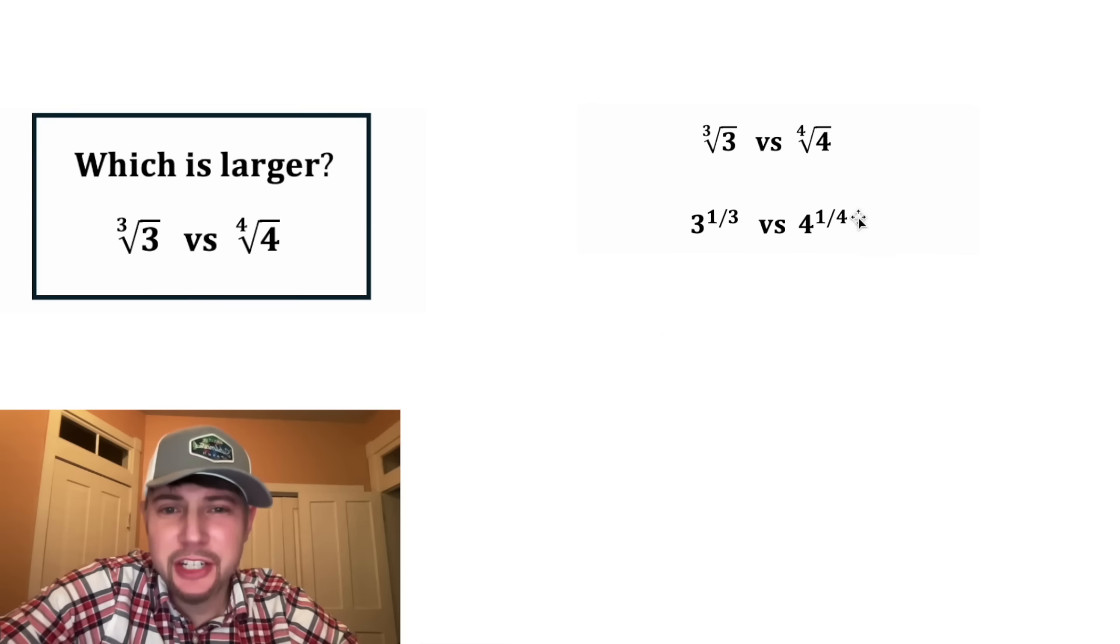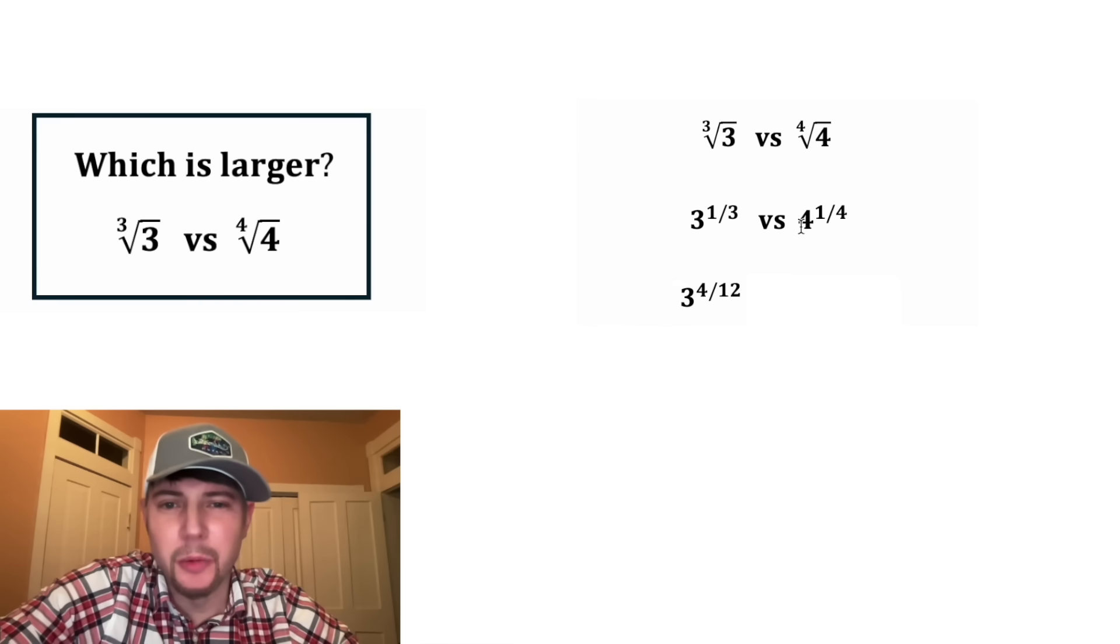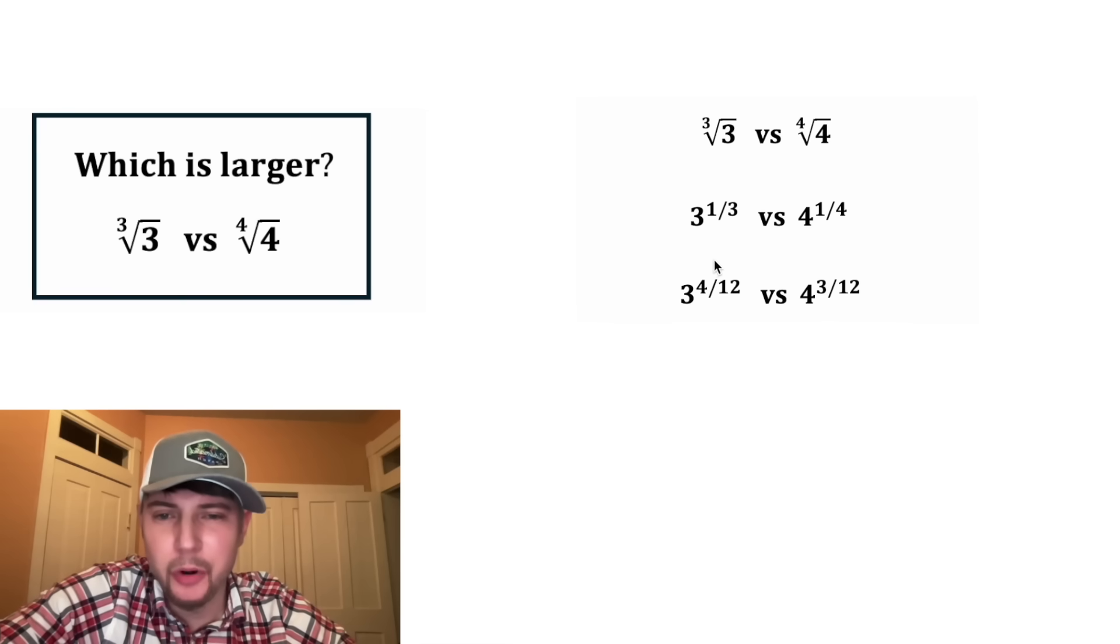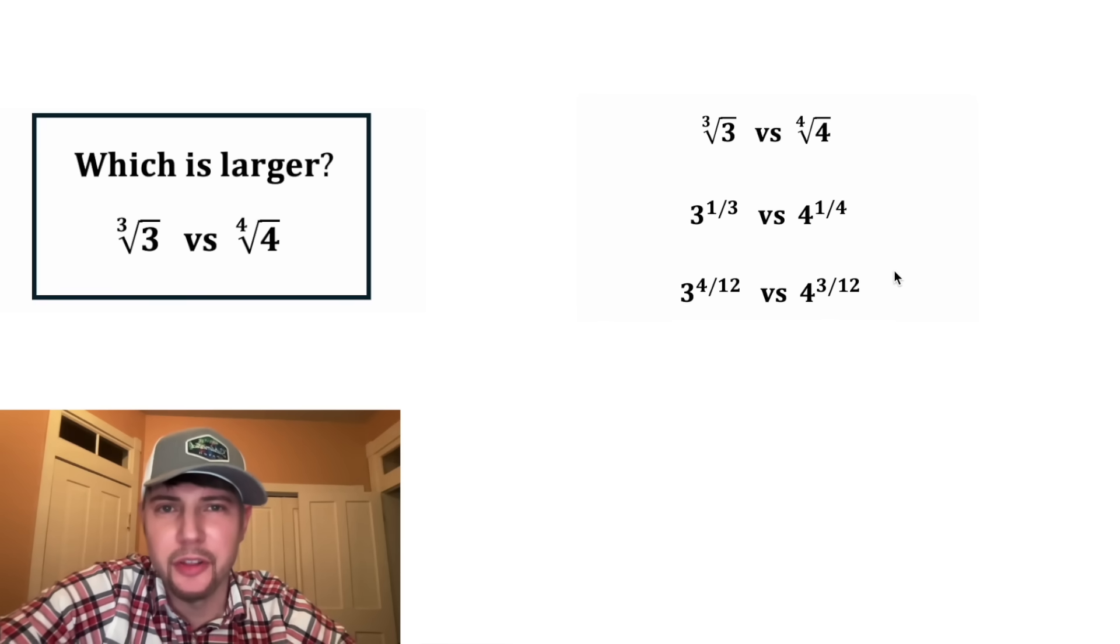Now from here, we have two fractions. Let's give these fractions a common denominator. This 1 third can be written as 4 twelfths, and the 1 fourth can be written as 3 twelfths. So we end up with three to the 4 twelfths versus four to the 3 twelfths.